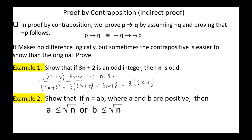Example 2: Show that if N equals AB where A and B are positive, then one of these integers must be less than the square root of N — that is, A less than the square root of N or B less than the square root of N. We start by assuming both A and B are greater than the square root of N. This means AB is greater than N, so N is not equal to AB. Since the negation of the conclusion implies the negation of the hypothesis — not P implies not Q — the original conditional statement is true, hence proved.